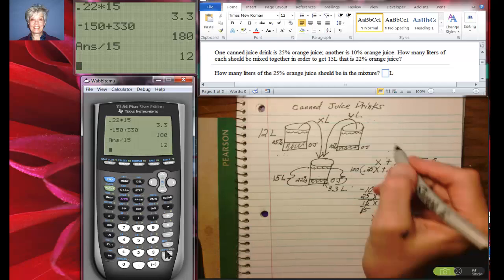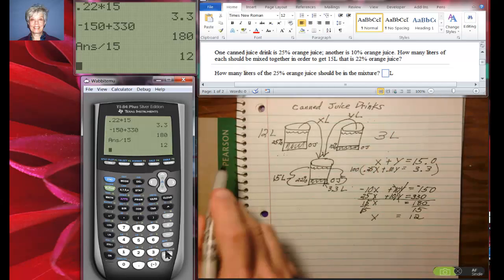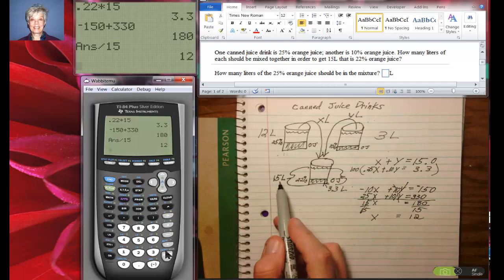Right, there could only be 3. I don't even have to do any calculations because 12 plus 3 is going to give me my 15.